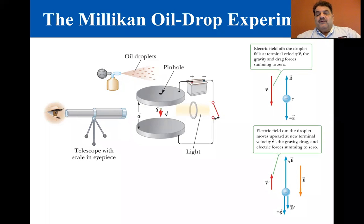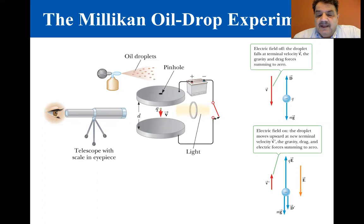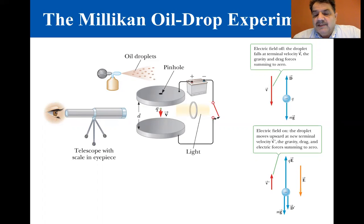With the field turned on, a drop moves slowly upward, typically at a rate of hundredths of a centimeter per second. The rate of fall in the absence of a field is comparable. So a single droplet with constant mass and radius can be followed for hours as it alternately rises and falls, simply by turning the electric field on and off.